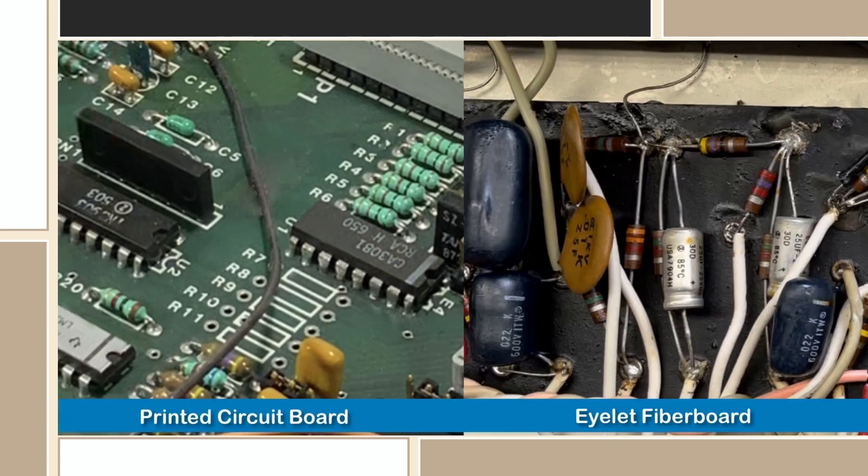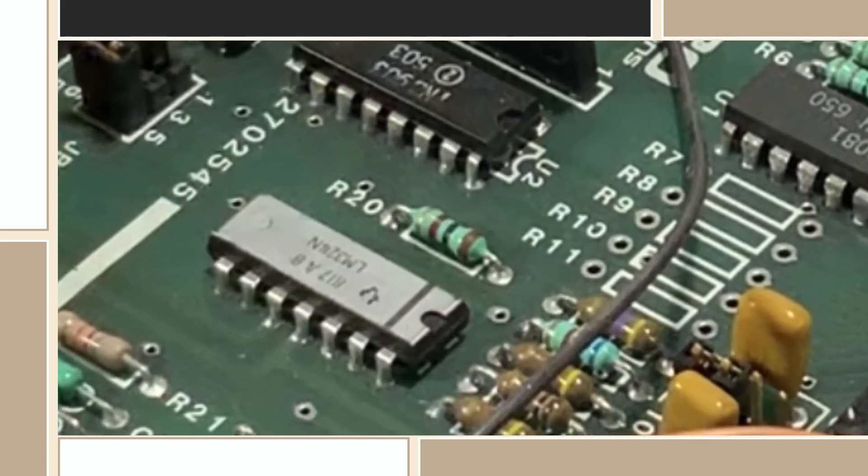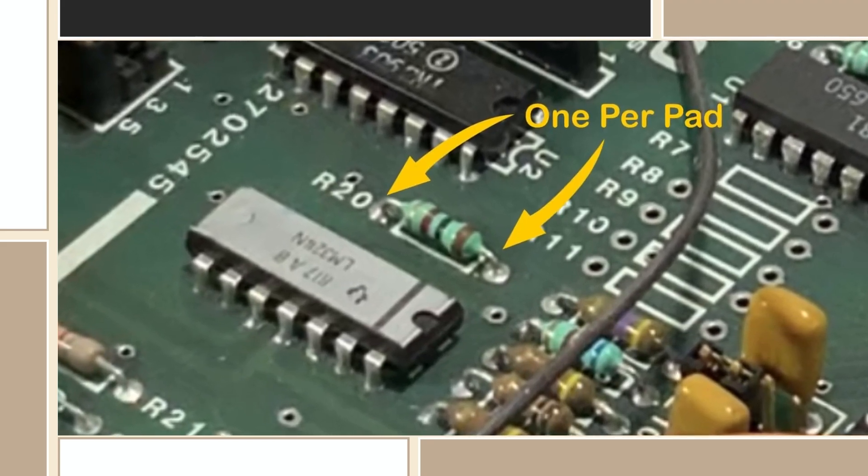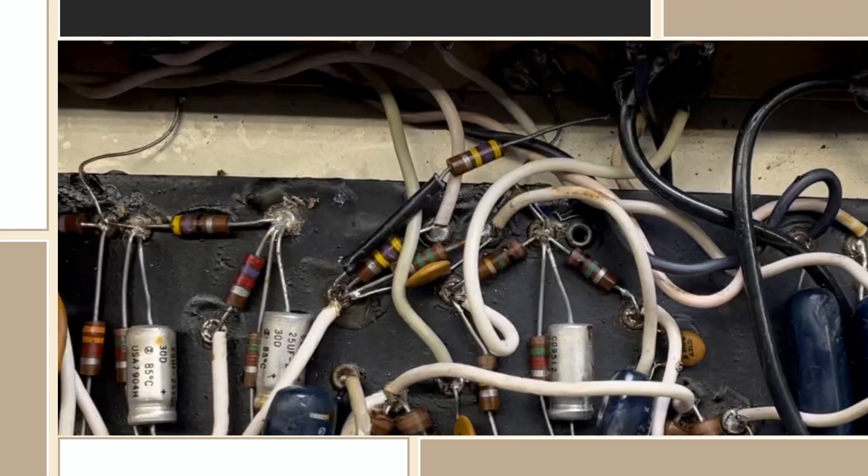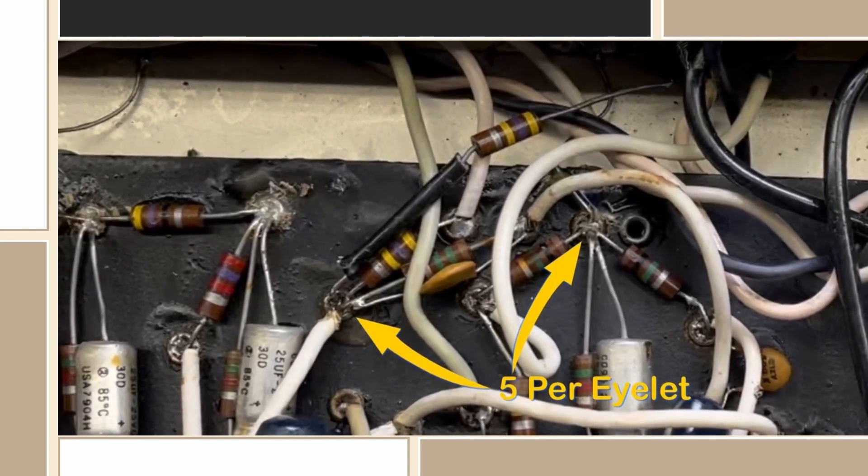When comparing a printed circuit board and eyelet fiberboard assembly, you will see a notable difference between the two. When comparing how a component is mounted on a pad of a circuit board, there is only one side of the component soldered, while on an eyelet fiberboard assembly, you have as many as that can fit in an eyelet.